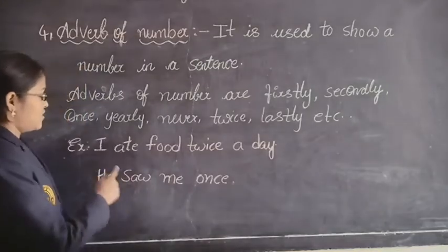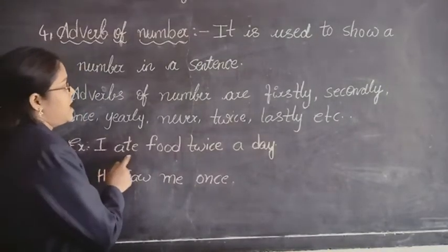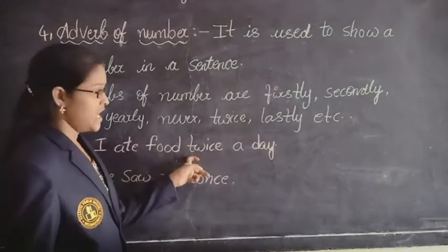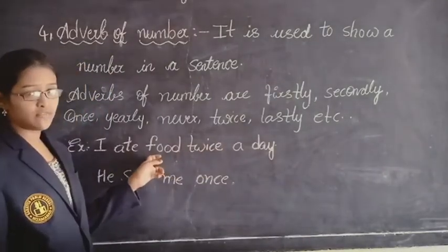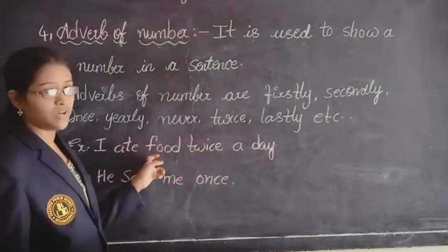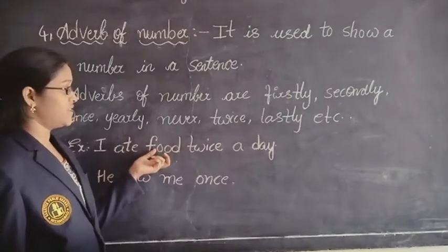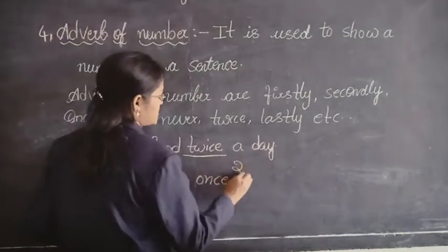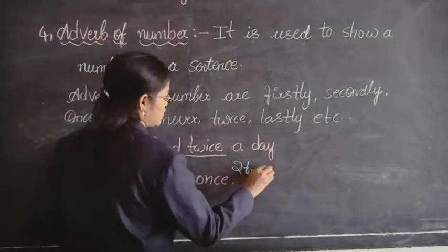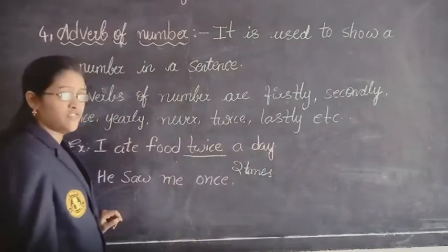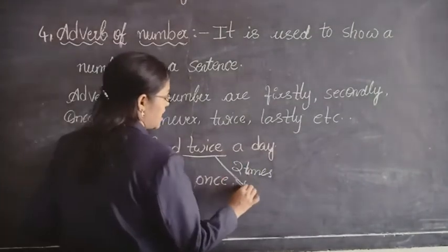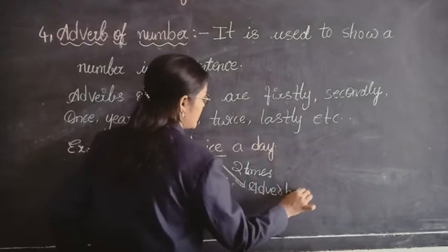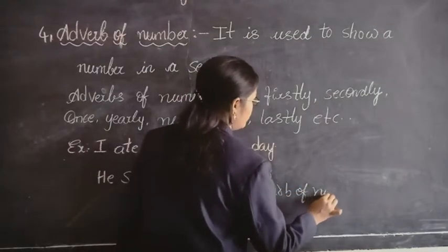So let us see the sentences. The first sentence is: I ate food twice a day. In this sentence, which word is showing us a number? Twice. Twice means nothing but two times. So in this sentence, twice is the adverb of number.